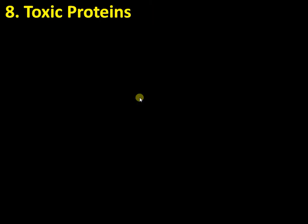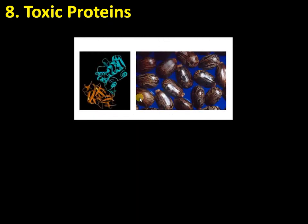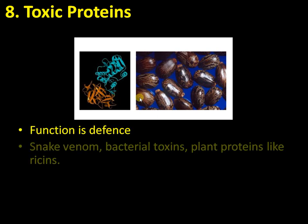Certain toxic proteins are also involved in specific defense. Ricin is a protein present in the castor plant. Snake venom, bacterial toxins, and plant proteins like ricin are all proteins involved in specific defense, imparting that particular organism with an advantage over its predators.